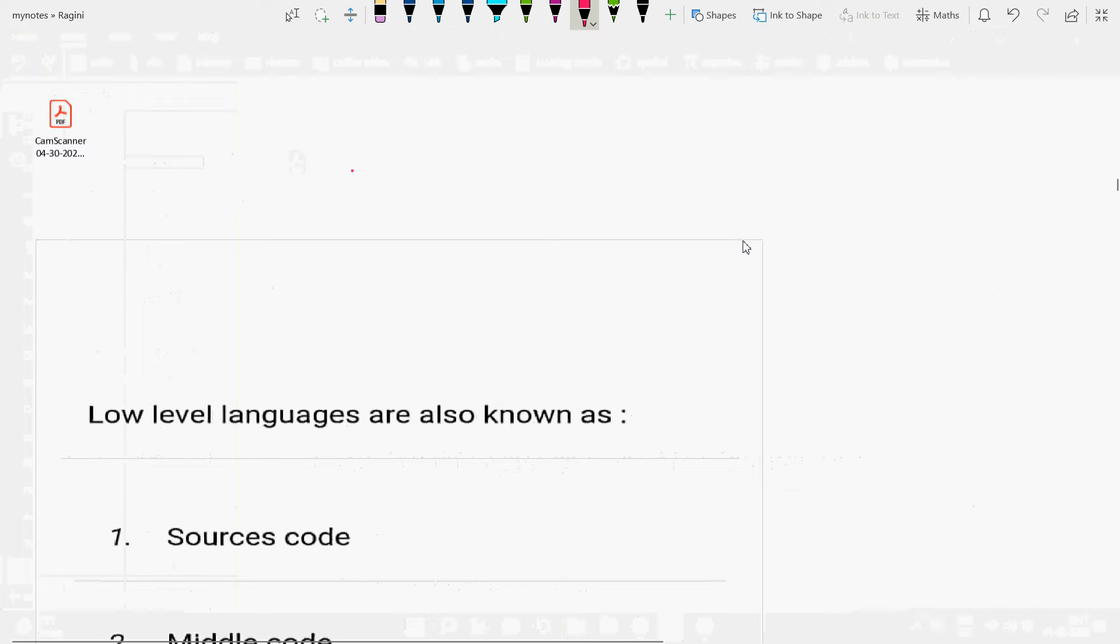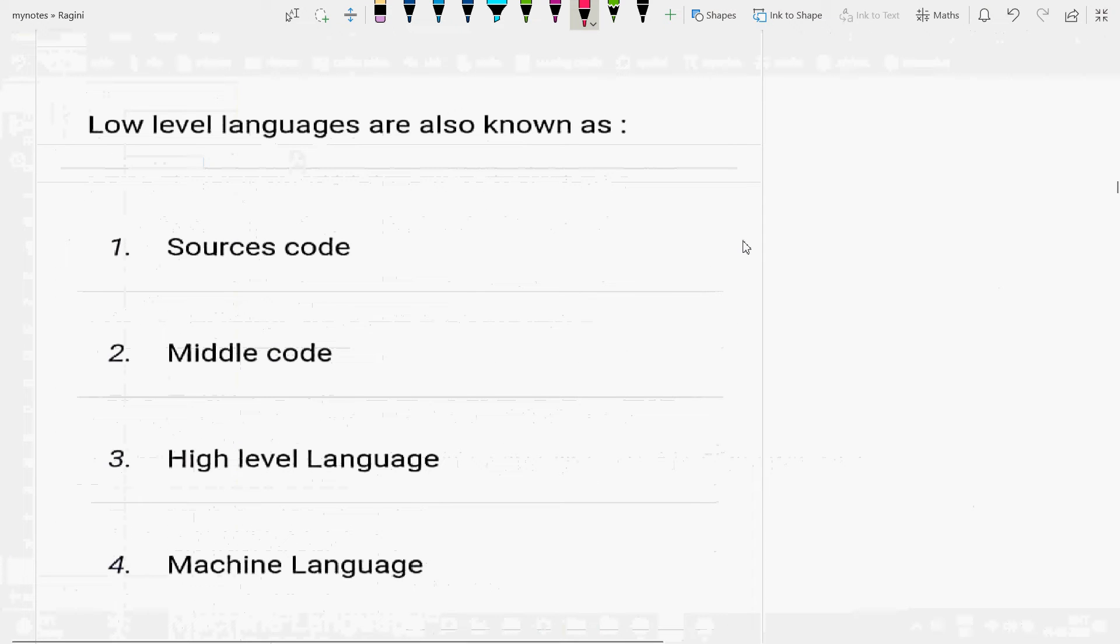Welcome to computer architecture questions. First question is: low level languages are also known as source code, middle code, high level languages, or machine language?